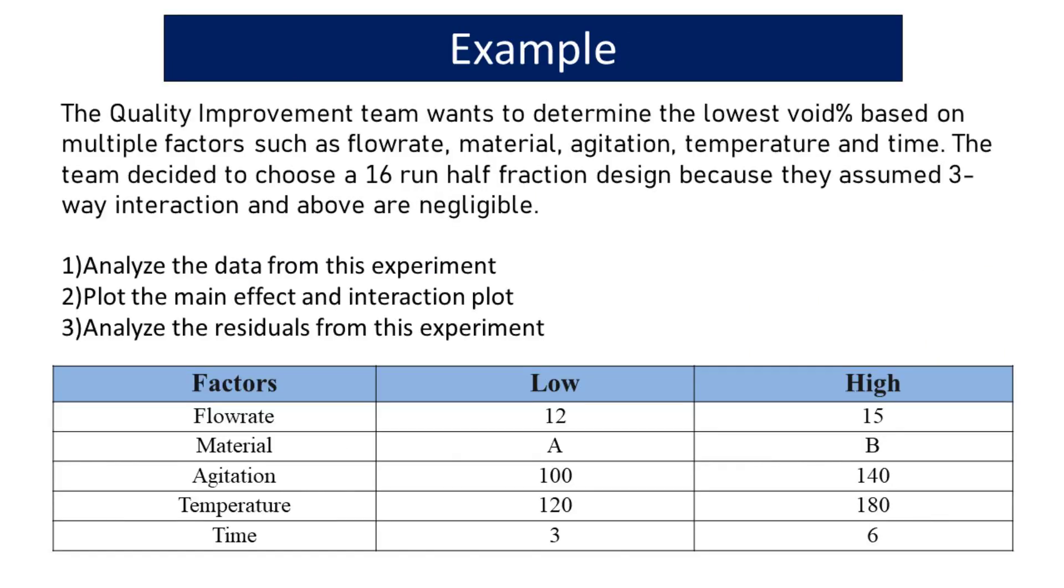The quality improvement team wants to determine the lowest void percent based on multiple factors such as flow rate, material, agitation, temperature, and time. The team decided to choose a 16-run half-fraction design because they assumed three-way interaction and above are negligible. Analyze the data from this experiment, plot the main effect and interaction plot, and analyze the residuals from this experiment.